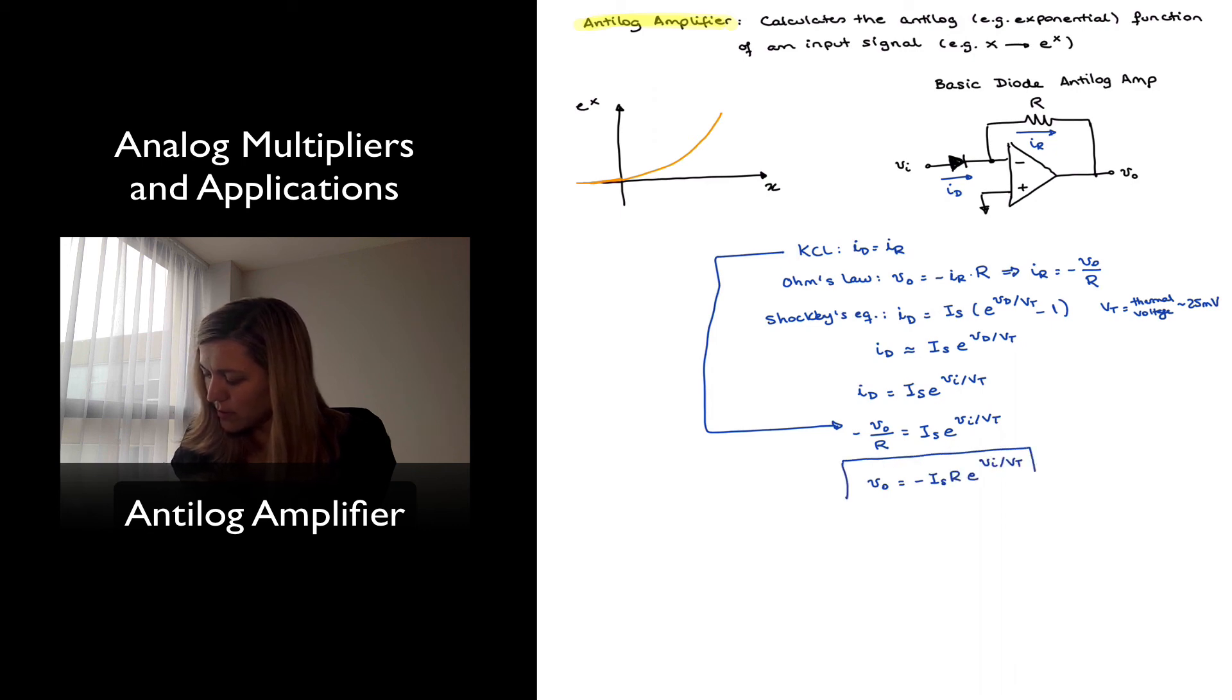So you can see the output voltage is proportional to the anti-log or exponential function of Vin. In more general terms, we have Vout being equal to some constant K1 times e to the Vin divided by K2, or e to the K2 times Vin, however you want to express it. So this is our anti-log amplifier.